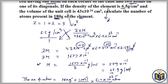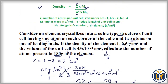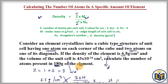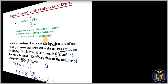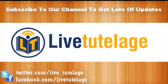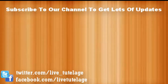You can see how I calculated the number of atoms present in a specific amount of the element. First I calculated the atomic mass of the element using the density formula, then I converted the mass into moles and moles into atoms. Thank you. If you like this video please click the like button, and if you have any questions or suggestions please comment below.